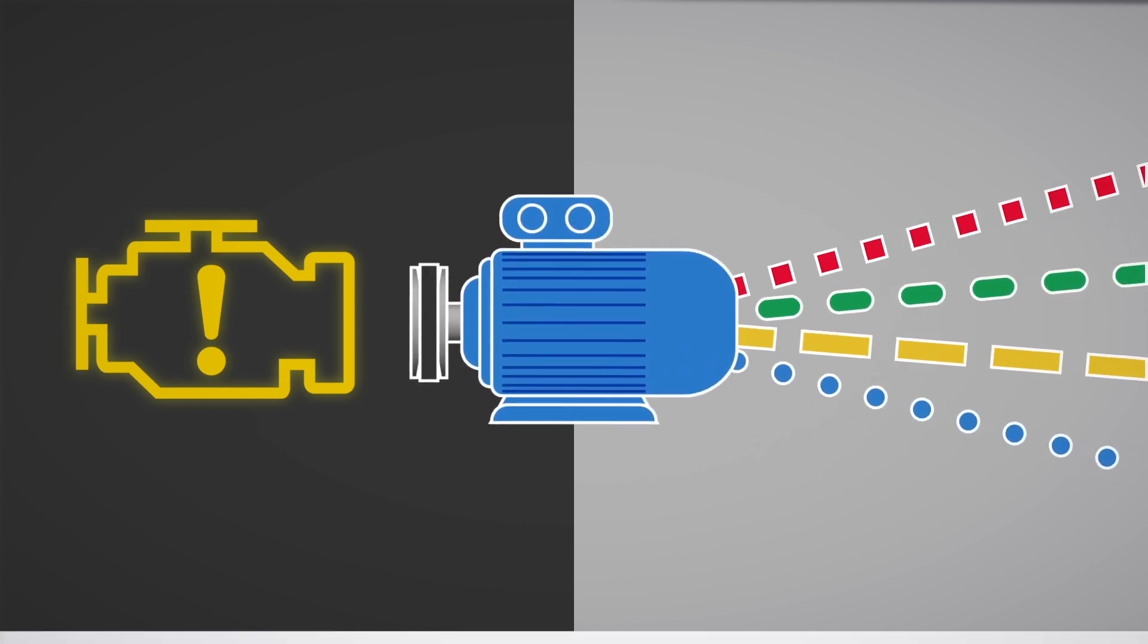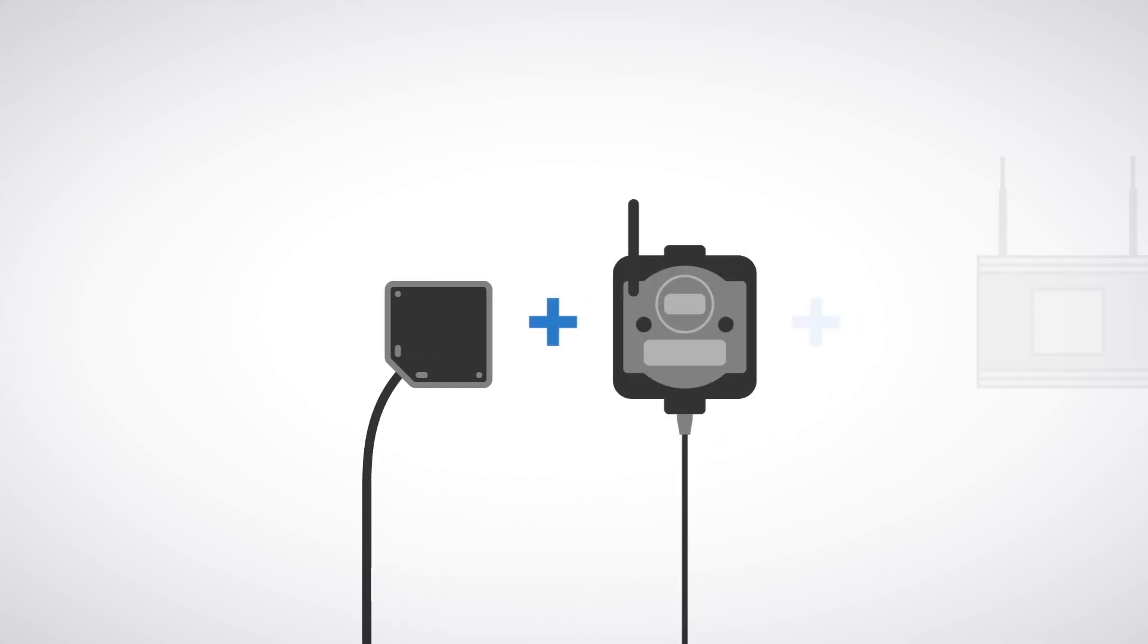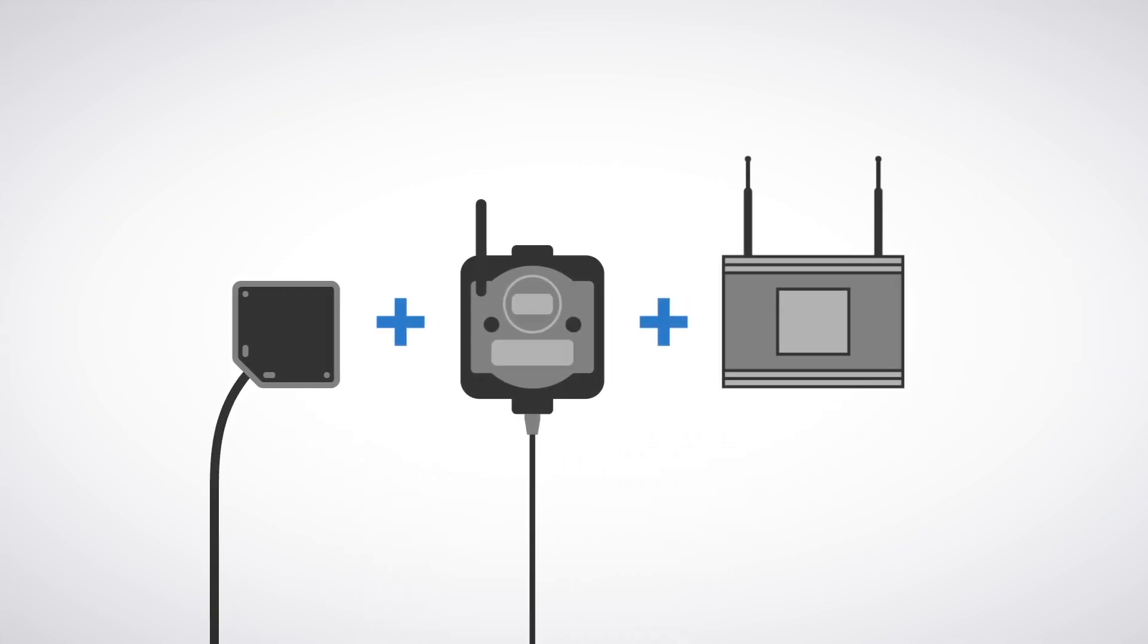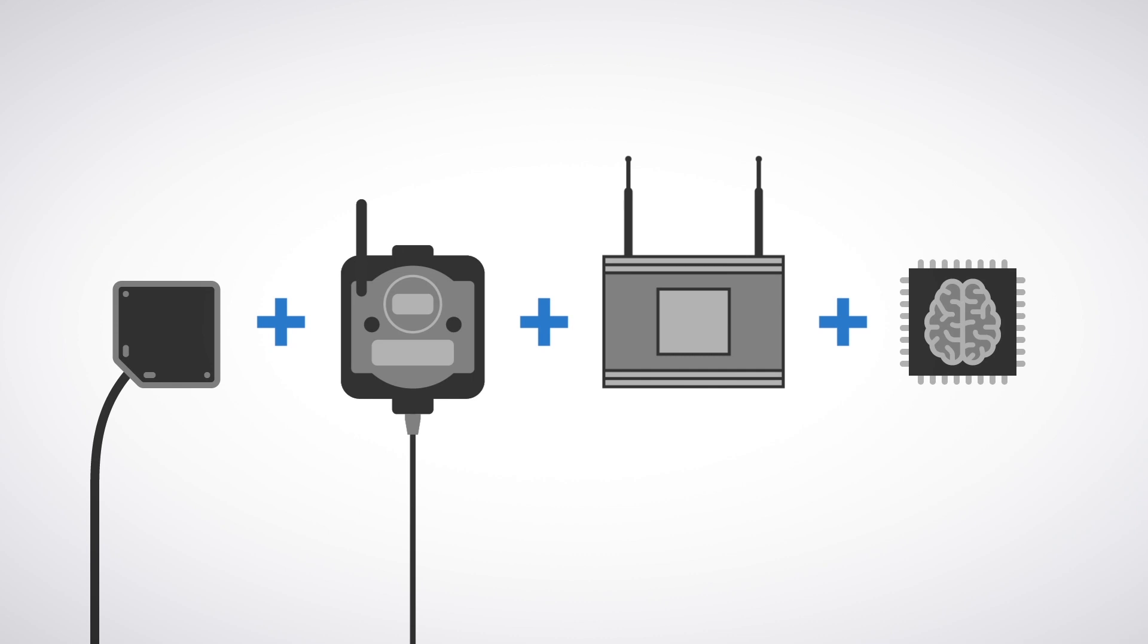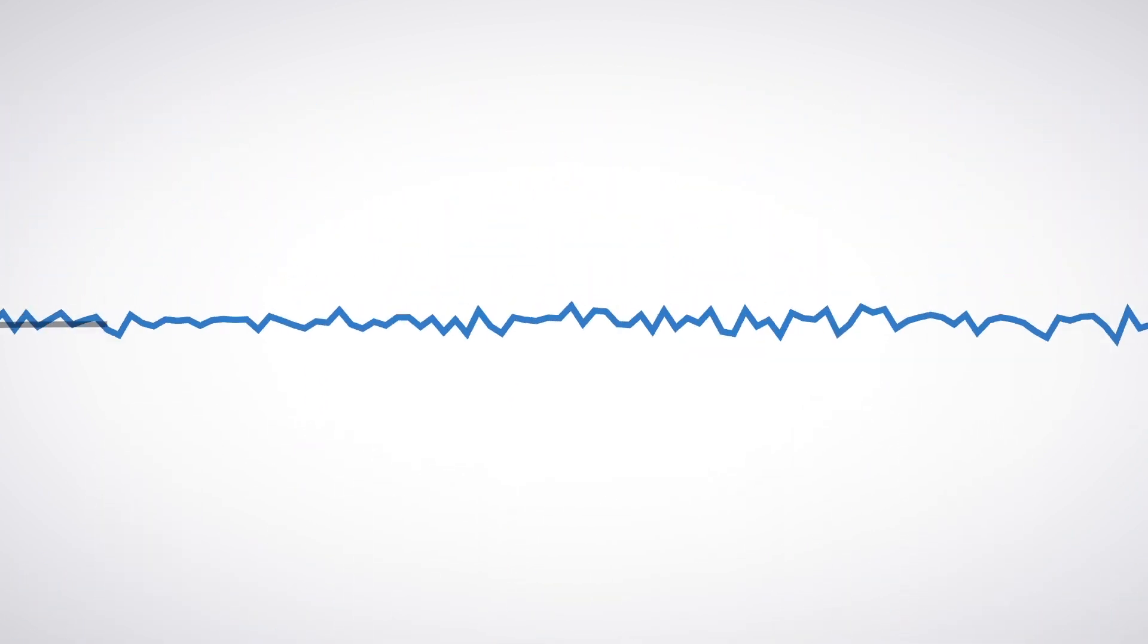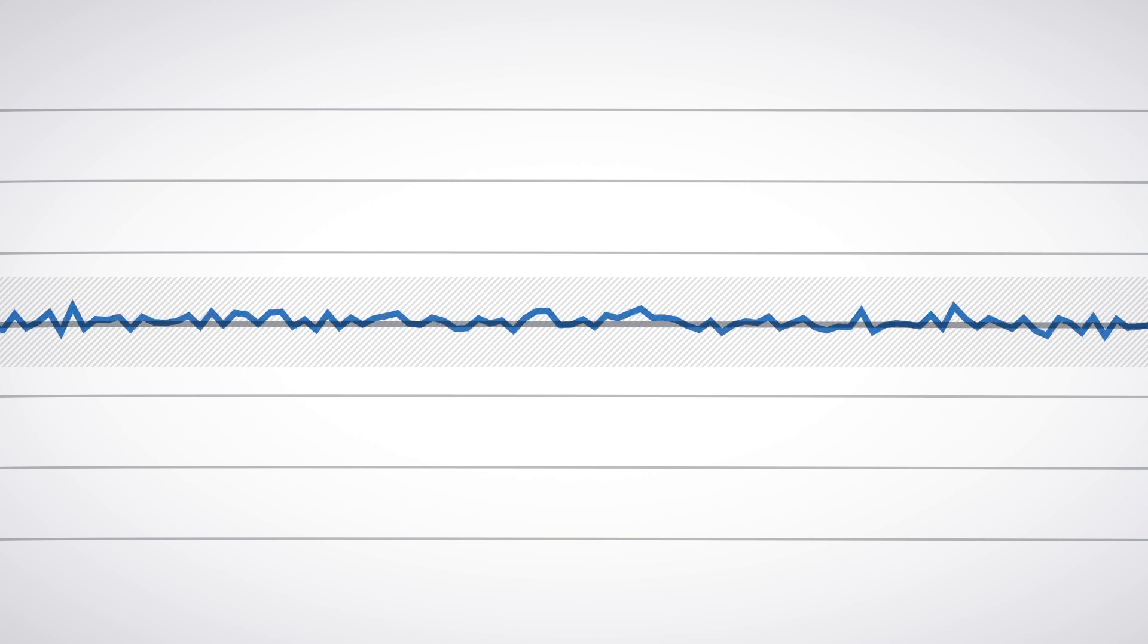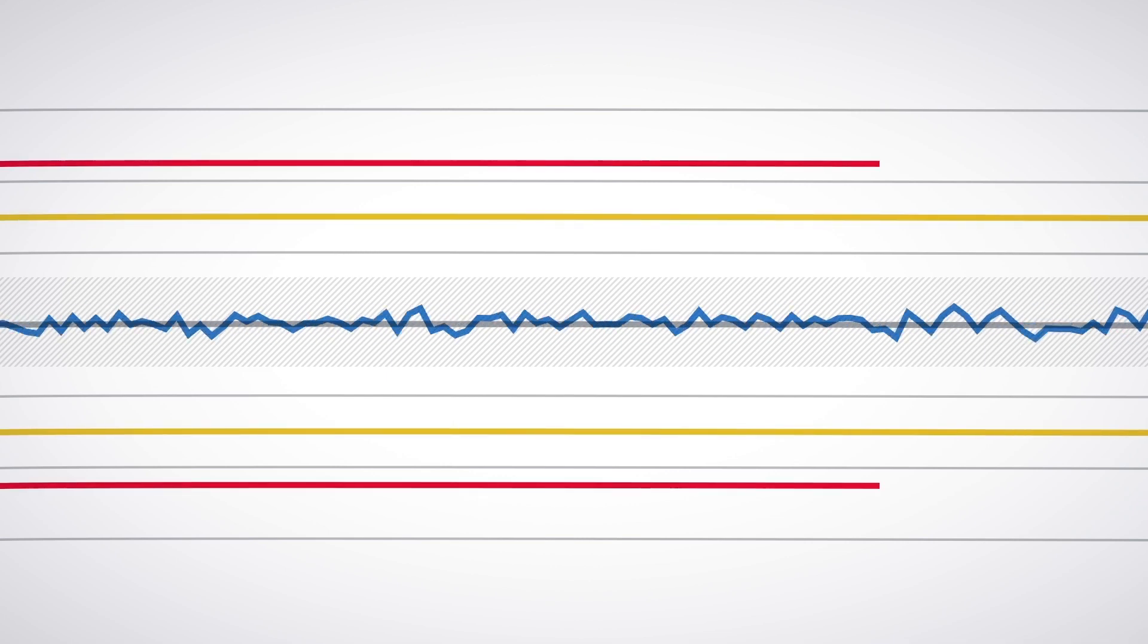With a Banner Engineering vibration sensor combined with a wireless node and a DXM wireless controller running our proprietary machine learning algorithm, it will analyze and learn from your machine's vibration level. It can even tell when your machine is running or not. It will then establish the vibration baseline of the machine and automatically set warning and alarm thresholds.